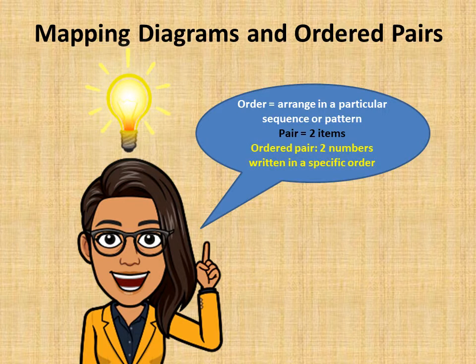Ordered pairs are two numbers written in a specific order. That's all I mean by ordered pairs — two numbers written in a specific order.